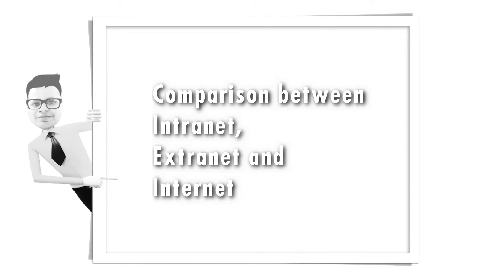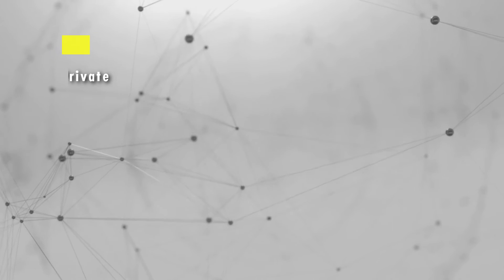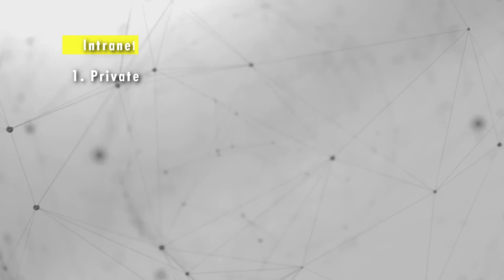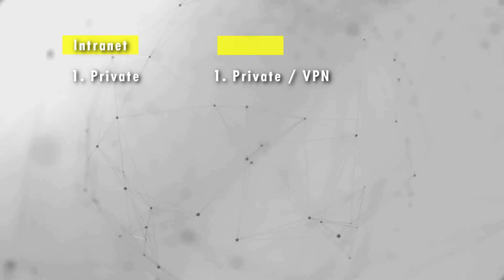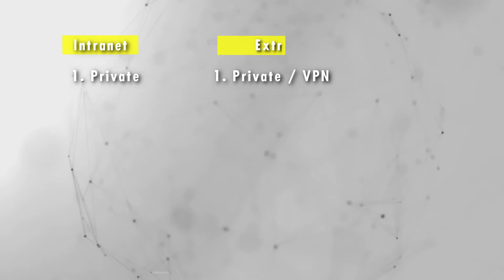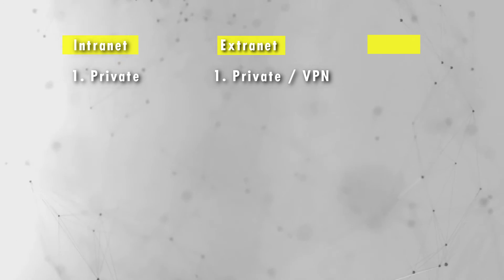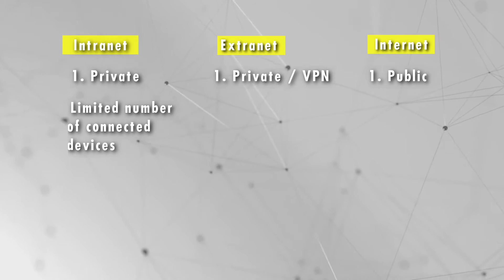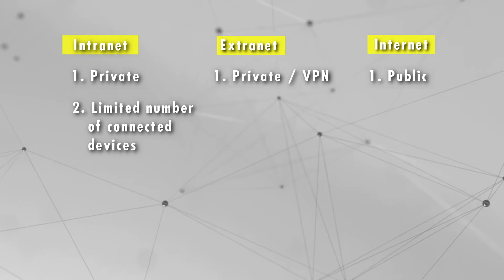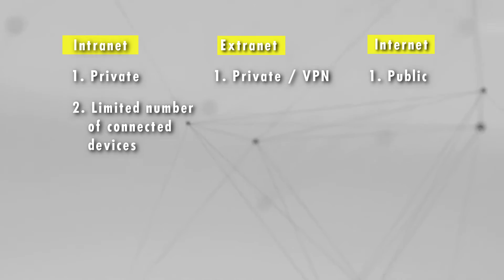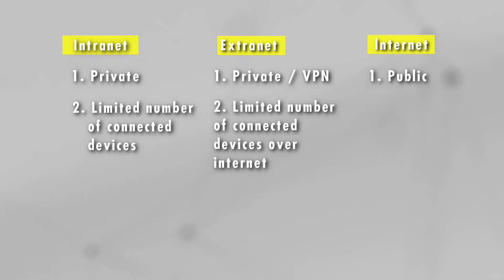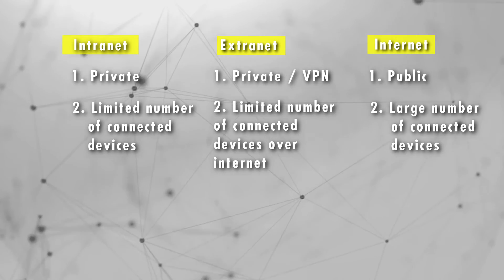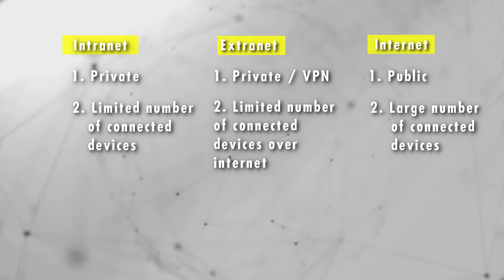Now for a comparison between intranet, extranet, and internet: intranet is private, extranet is also private or accessed through a virtual private network, but internet is public. We can connect a limited number of devices through intranet, and in extranet also we can connect limited devices.